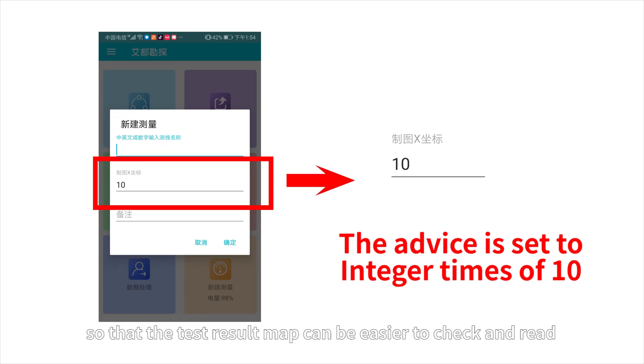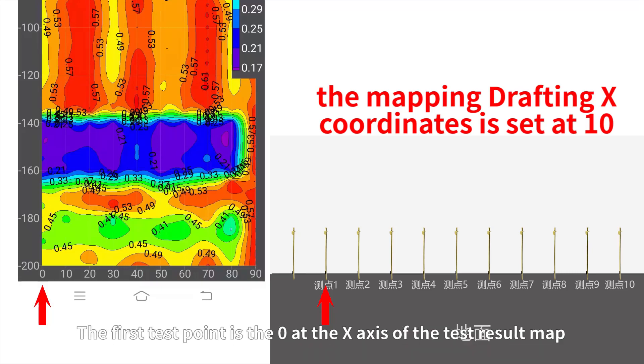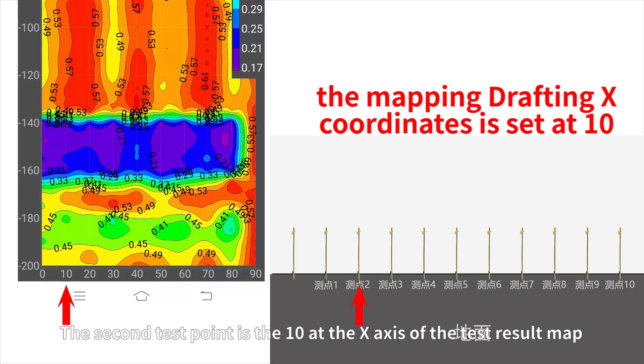For example, if the mapping drafting x-coordinates is set at 10, the test point number would show as a multiple of 10. The first test point is 0 at the x-axis of the test result map. The second test point is 10 at the x-axis of the test result map.